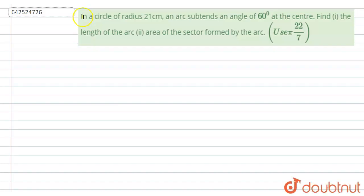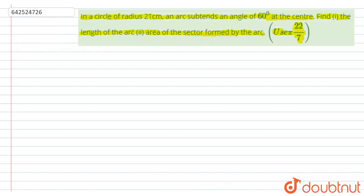Hello students, today we are going to solve this question. The question says: a circle of radius 21 centimeters and an arc subtends an angle of 60 degrees at the center. We need to find two things — first, the length of the arc, and second, the area of the sector formed by the arc. We are also given that we have to use the value of pi as 22 over 7.